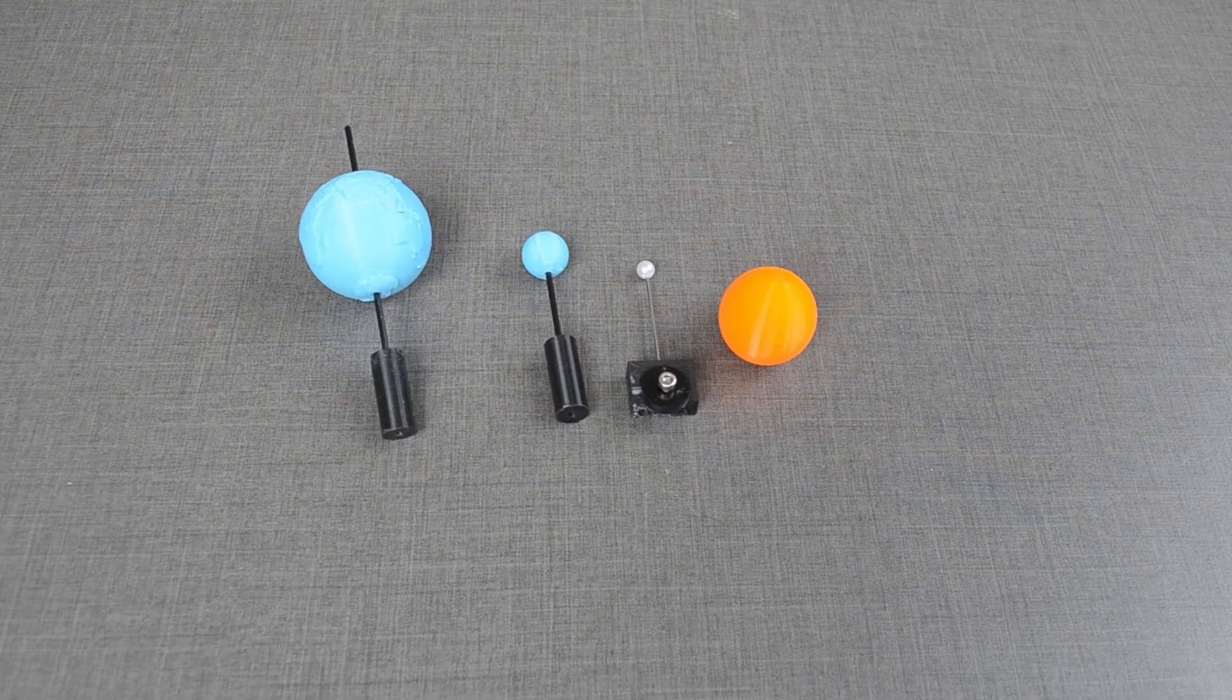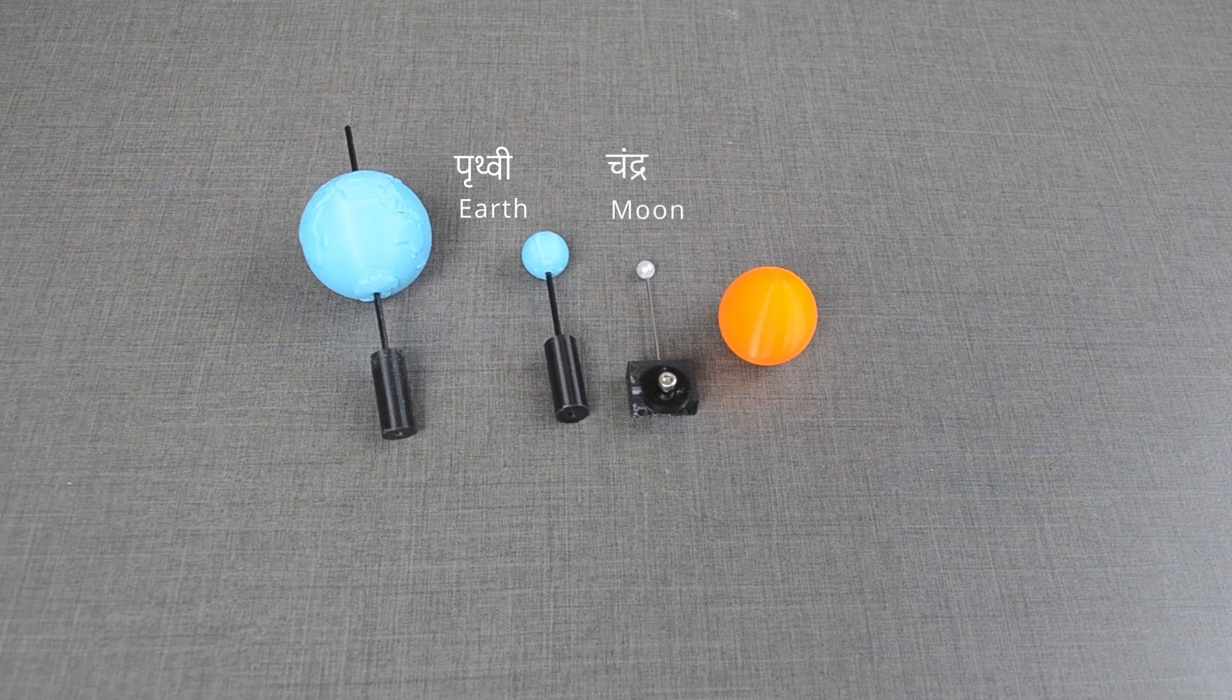In this model, we will use three celestial objects: Earth, Moon and Sun.